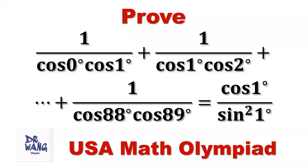Hello everyone, I'm Dr. N. Here I ask the question: prove 1 over cosine 0° times cosine 1° plus 1 over cosine 1° times cosine 2°, plus ... plus 1 over cosine 88° times cosine 89°, equals cosine 1° over sine 1° squared. How do we prove this identity?